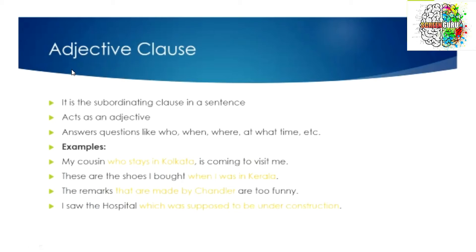An adjective clause answers questions like who, when, where, at what time, etc. For example, my cousin who stays in Kolkata is coming to visit me. Now here you are describing the noun, my cousin. You cannot literally say it in a word, you have to use a clause which is a group of words. And now that it is describing a noun, which is your cousin, it is an adjective clause.